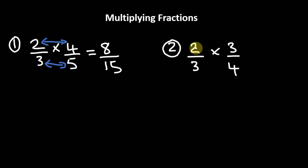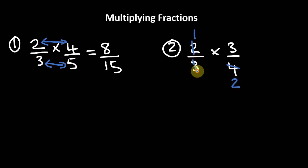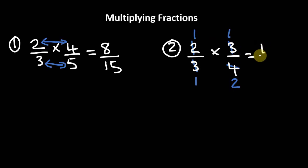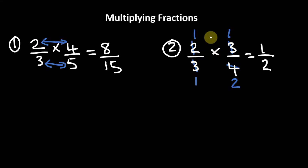We can use something out of the numerator to simplify something in the denominator. We know that 2 goes into itself once, and 2 goes into 4 twice. We also know that 3 goes into itself once, and 3 goes into itself again once. So carrying out our multiplication, we get 1 times 1 which is 1, divided by 1 times 2 which is 2. The answer is one half.